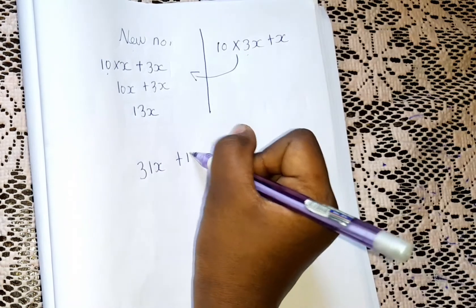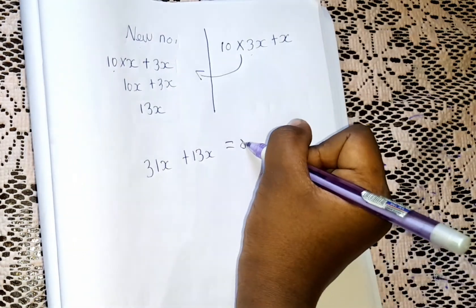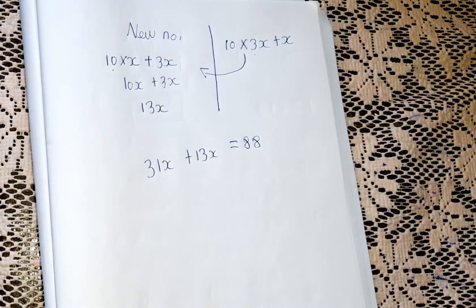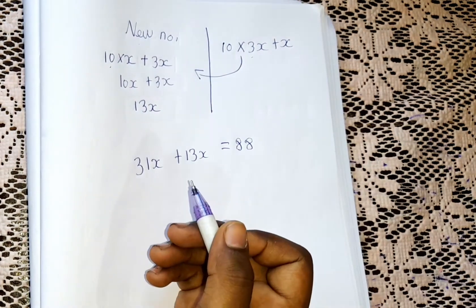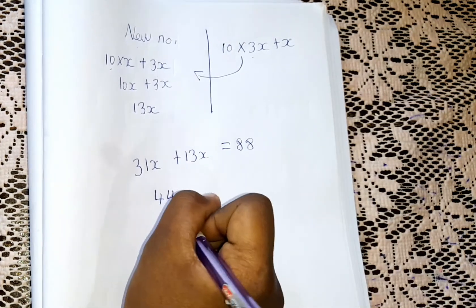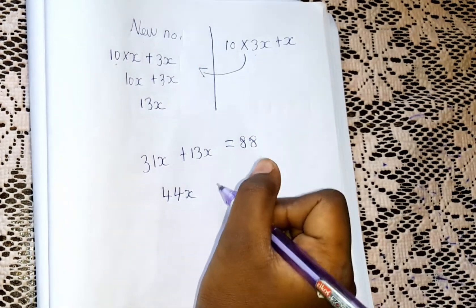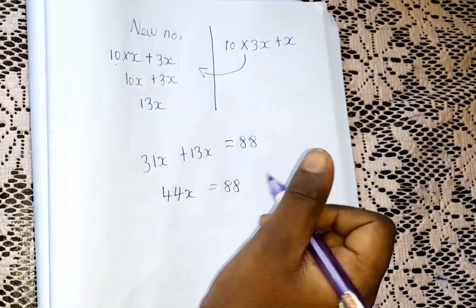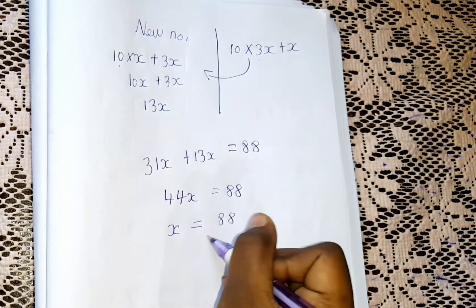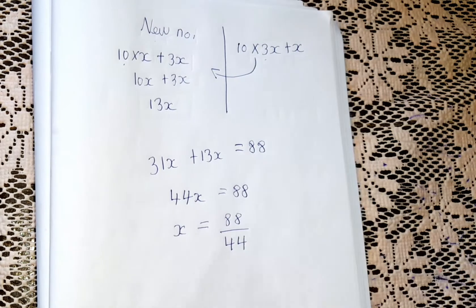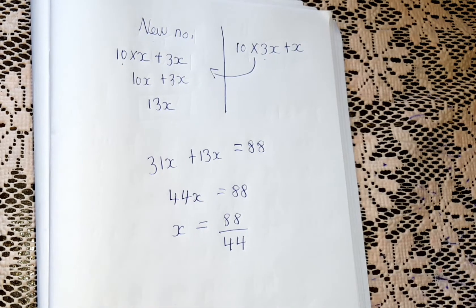They said that if we add the original number and the new number we get 88. So: 31x plus 13x equals 88. The answer isn't 88 directly — that's what we get after solving. Adding: 31 plus 13 is 44, so 44x equals 88. Now we can write x equals 88 divided by 44.